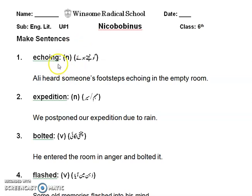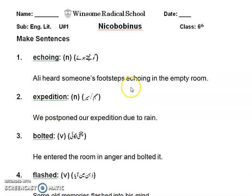The very first word is 'a-coin,' meaning gunjte huwe (echoing/reverberating). Example sentence: Ali heard someone's footsteps, a-coin, in the empty room.